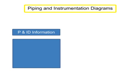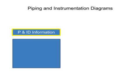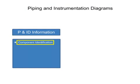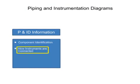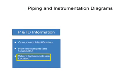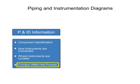Piping and instrumentation diagrams provide information that include component identification, how instruments are connected, where instruments are located, and their function within a process.